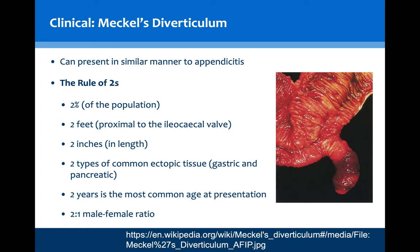Meckel's diverticulum can be remembered through the useful rule of twos: it occurs in 2% of the population, lies 2 feet proximal to the ileocecal valve, typically measures 2 inches in length, presents most commonly at the age of 2, and has a 2-to-1 male-to-female preponderance ratio. The Meckel's diverticulum will typically contain either gastric or pancreatic tissue, which can be seen through a 99m-technetium scan, whereby gastric tissue is radiolabelled and ectopic uptake is seen in the right iliac fossa.